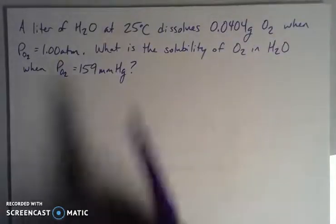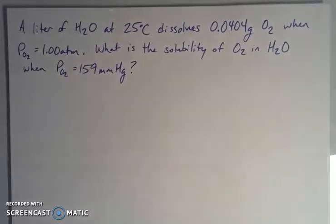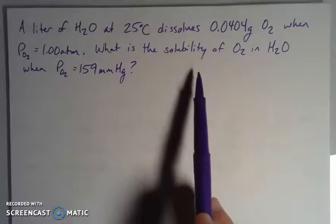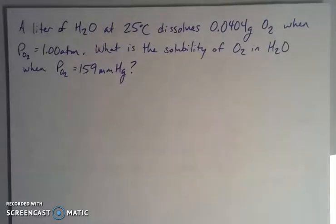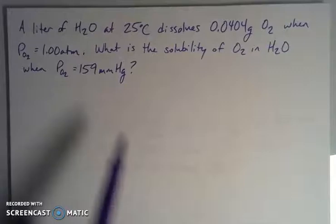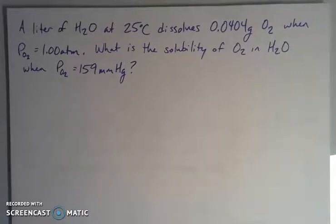So if we have a liter of water at 25 degrees Celsius, this says that it dissolves 0.0404 grams of oxygen when I have a partial pressure of one atmosphere, which is just kind of sea level normal atmospheric pressure. So it wants to know a new solubility of oxygen in that water when we've increased or decreased, we're in different units here, to 159 millimeters of mercury. So it looks like we're going to have to do a conversion. We'll see what's going on if my pressure is increasing or decreasing, and then kind of go from there.